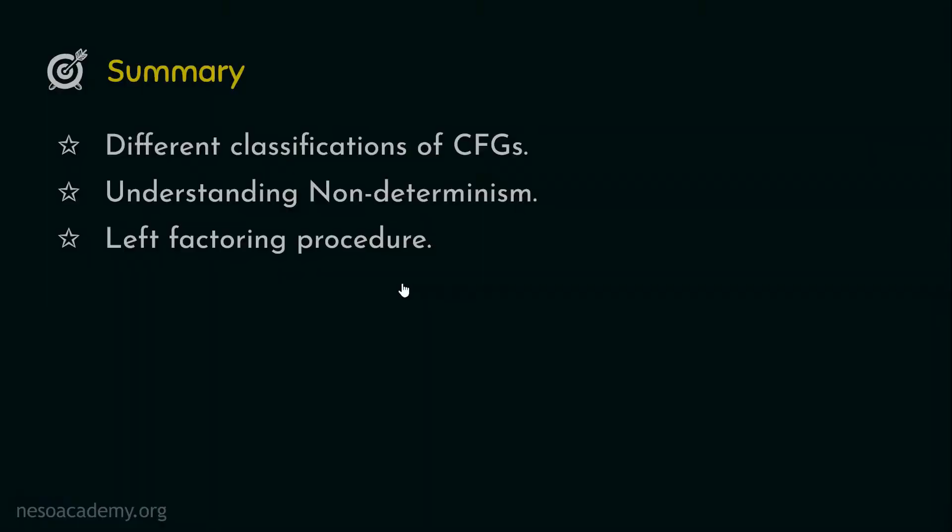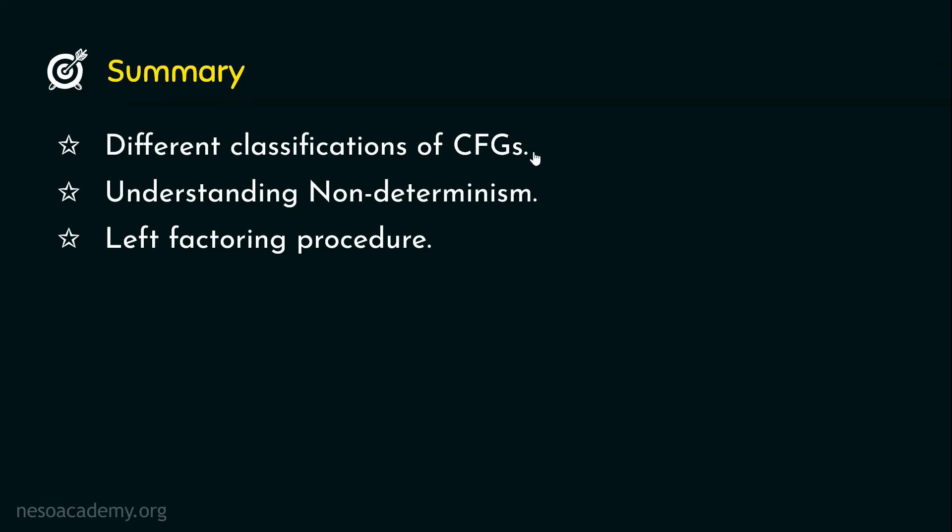So in this session we saw all the different classifications of the CFGs. Remember there are three types of classifications of CFGs: ambiguous and unambiguous, left and right recursive, and non-deterministic and deterministic CFGs. Then we understood the concept of non-determinism and the problem, that is the common prefix problem, which causes backtracking for top-down parsers. Finally we learned the left factoring procedure using which we can convert a non-deterministic grammar into its equivalent deterministic form. That will be all for this session. In the next couple of sessions we will see some solved problems on elimination of non-determinism. I hope to see you in the next ones. Thank you all for watching.